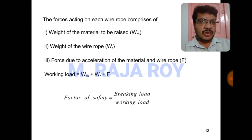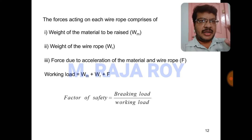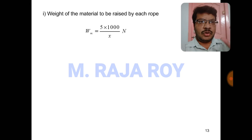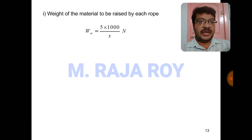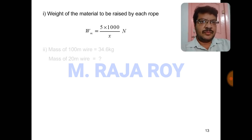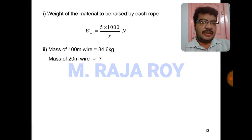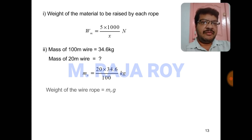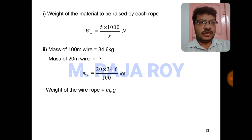Once the working load is known, and since the braking load and factor of safety are given, we can equate them to find the unknown X. The total weight is 5000 N carried by X ropes, so weight lifted by one wire is 5000/X N. For 100 meter length the mass is 34.6 kg, so for 20 meters: mass = 20 × 34.6 / 100.